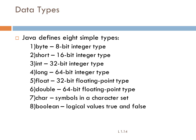Next one, data types. There are eight different simple data types of Java language. These are byte, short, int, long, float, double, char, and boolean.